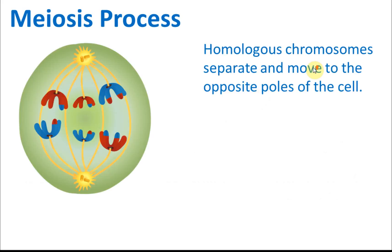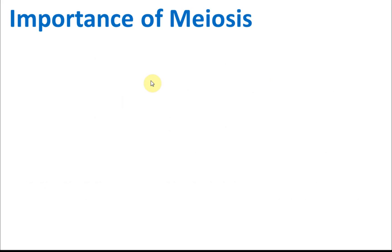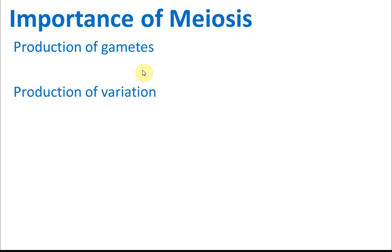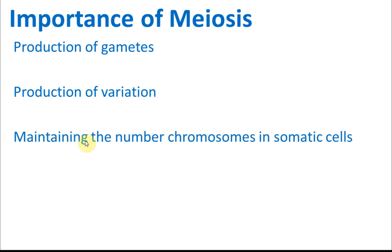From one parent cell, meiosis produces four cells. The importance of meiosis includes: the production of gametes for reproduction; the production of genetic variation, since each gamete carries only half the chromosomes and combines with another half from another organism; and maintaining the chromosome number in somatic cells.